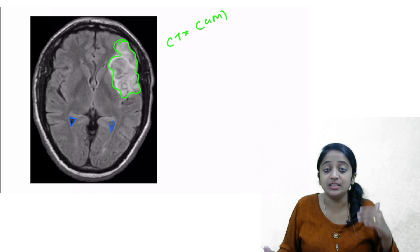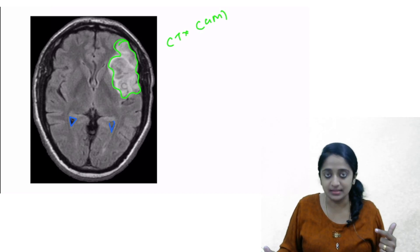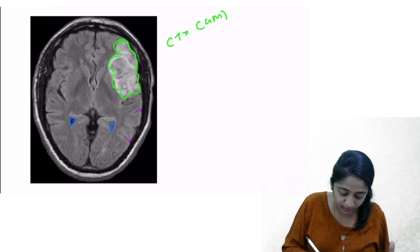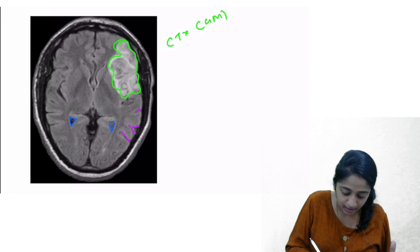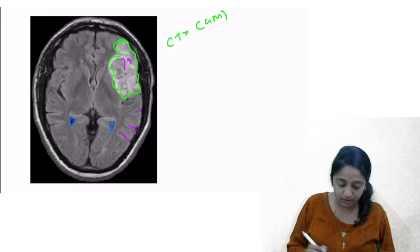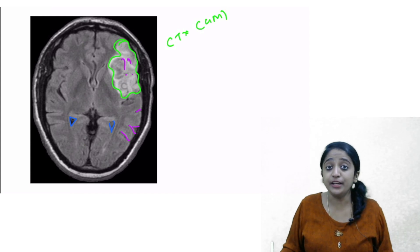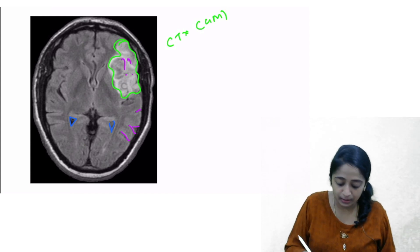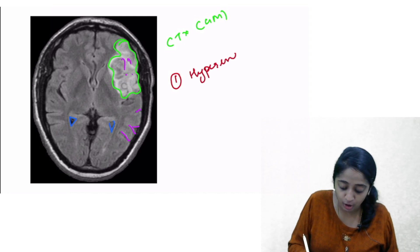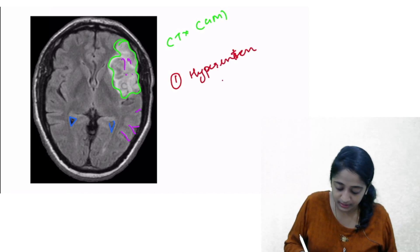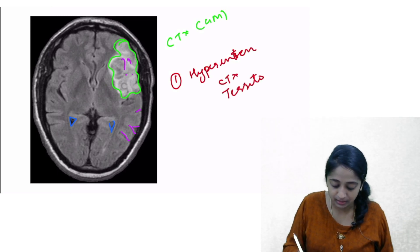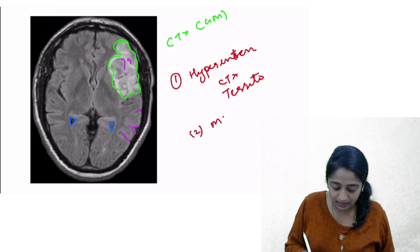Along with hyperintensity, I also see mass effect. How do we identify mass effect? There is effacement of the cortical sulci. These are the cortical sulci, but they are not visible here. So one of the features of acute infarct on FLAIR images is hyperintensity involving the cortex and white matter following a territorial pattern, associated with mass effect.